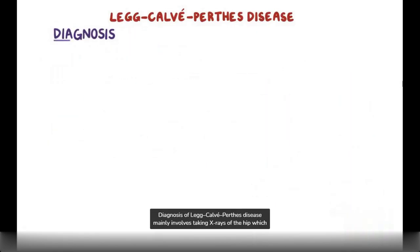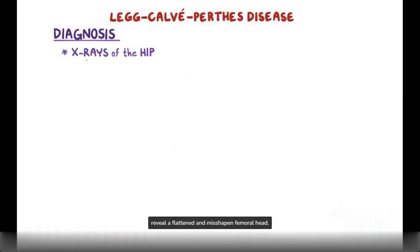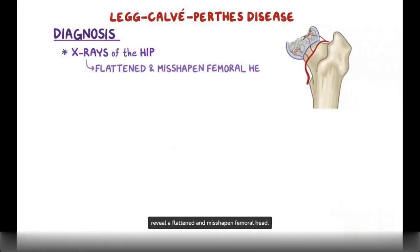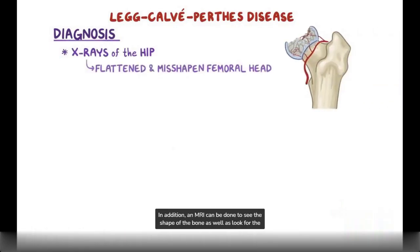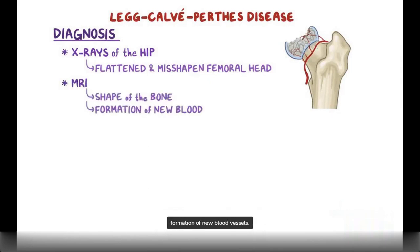Diagnosis of Legg-Calvet-Perthes disease mainly involves taking x-rays of the hip, which reveal a flattened and misshapen femoral head. In addition, an MRI can be done to see the shape of the bone as well as look for the formation of new blood vessels.